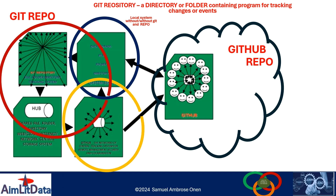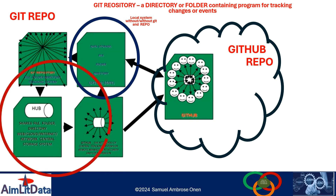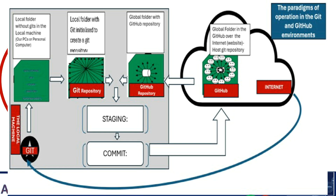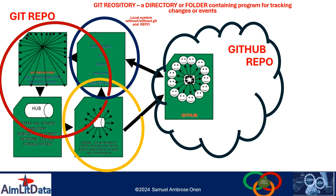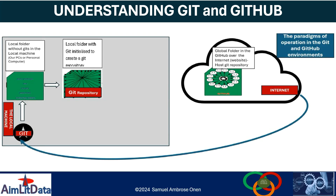When you create a Git repository, you can push it to your GitHub to make a GitHub repository. Remember, GitHub is completely different from Git or a Git repository. GitHub is a host for Git repositories. So the Git repositories that we create locally, we push them to GitHub to be hosted there. GitHub is a server found on the internet to host our Git repositories, and those Git repositories hosted on GitHub are called GitHub repositories.